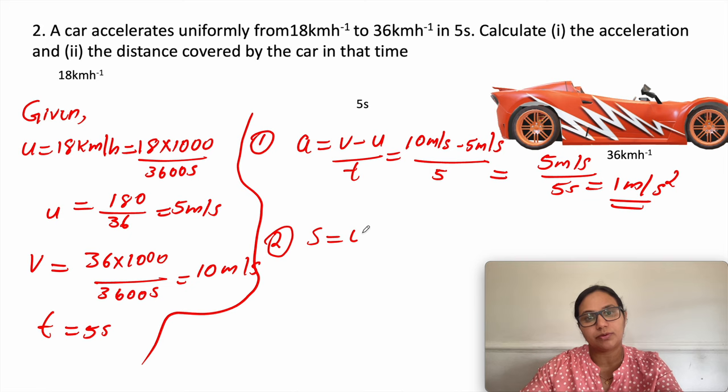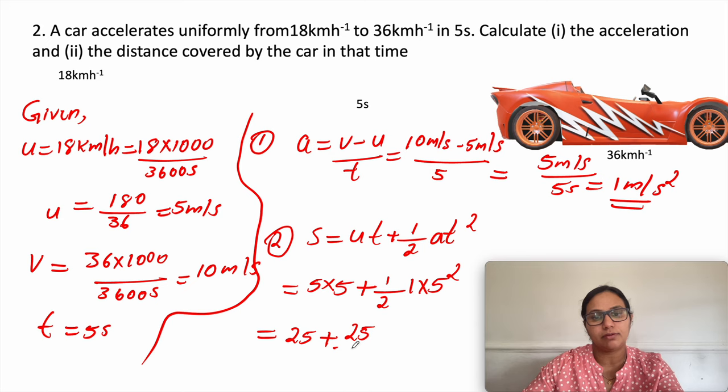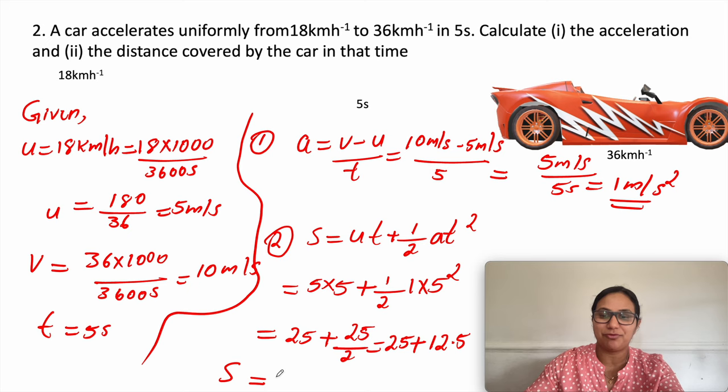For the distance traveled: s = ut + ½at² equals 5 times 5 plus half times 1 times 5 squared, which gives 25 plus 25 divided by 2, that is 25 plus 12.5, so s equals 37.5 meter.